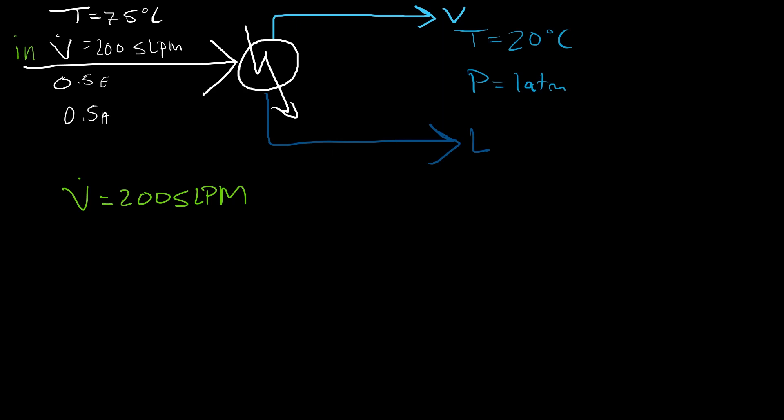Since the volumetric flow rate is given at standard conditions — which is one atmosphere and zero degrees Celsius, or 273 Kelvin — we can approximately assume it is an ideal gas. The pressure is not too high, the molecules are sufficiently separated, so PV = NRT applies. Because we have a volumetric flow rate, we'll naturally get a molar flow rate, so let's rearrange to solve for moles.